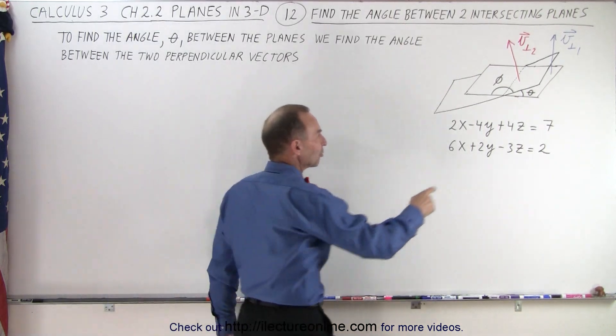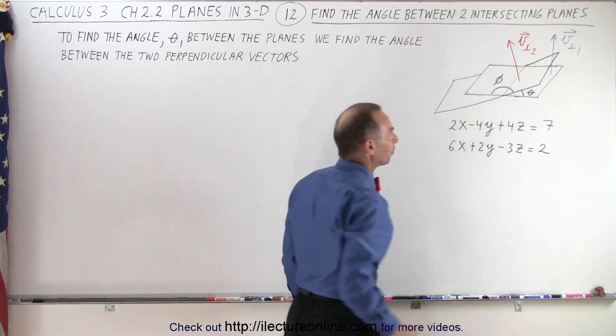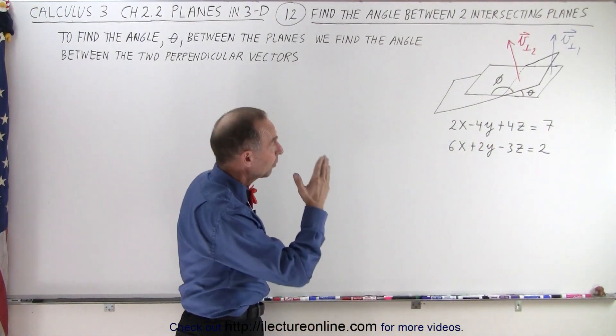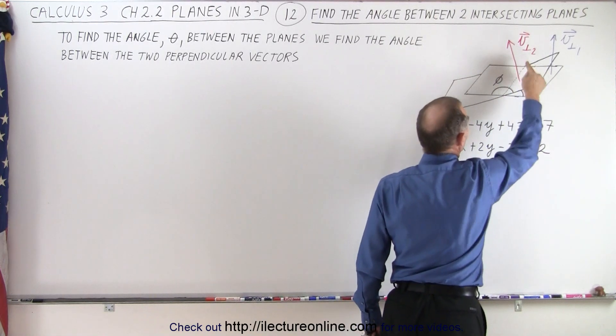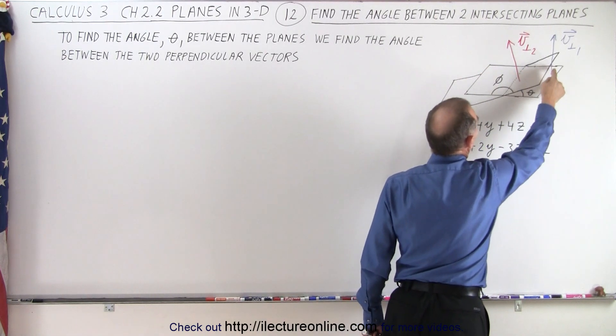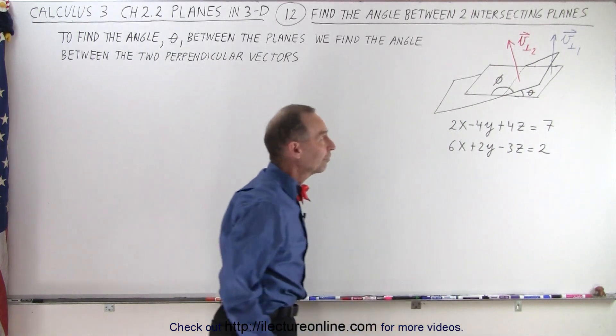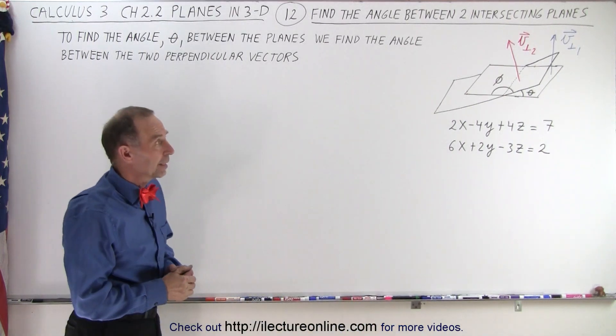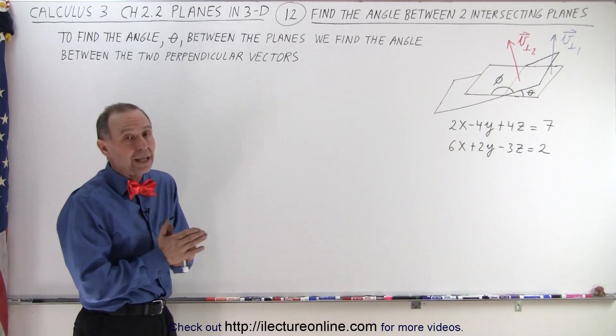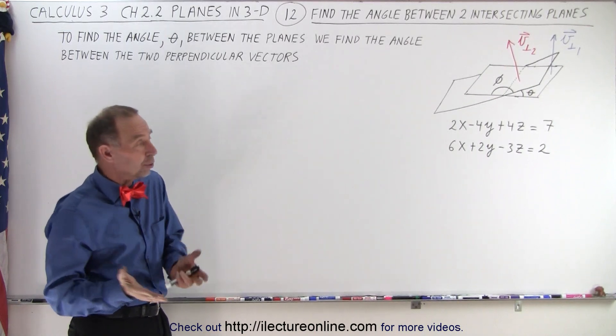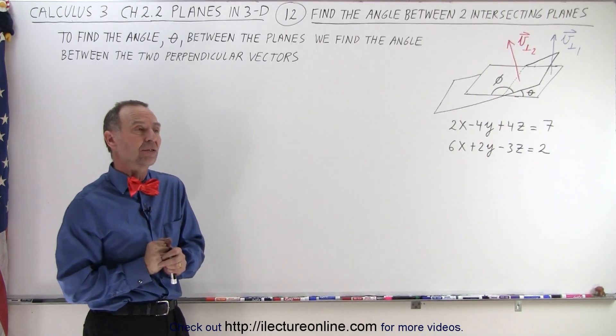So let's say that here we have the two equations representing the two planes. Now notice we have a red vector, that is the perpendicular vector to the second plane, and the blue vector is the perpendicular vector to the first plane. Now, the angle between those two vectors will equal the angle between the planes. So all we have to do is find the angle between the two vectors.